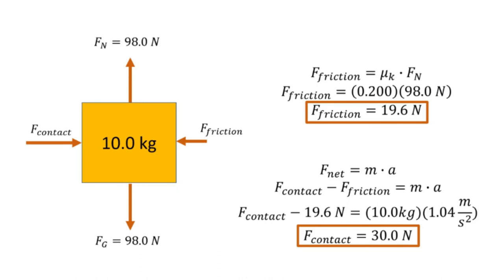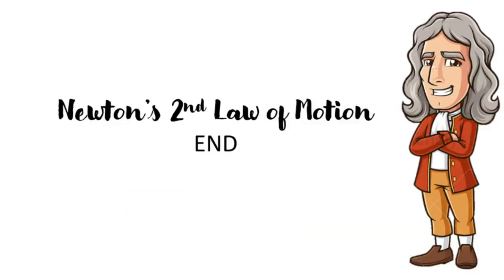Looking closely, we can now confidently say that our free body diagram is correct — the friction force is really smaller than the contact force and the applied force. That ends our lesson for today. Have a nice day!